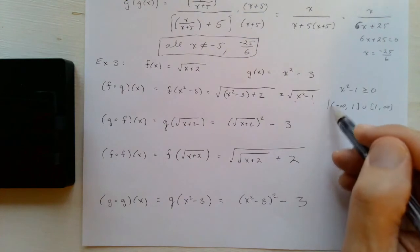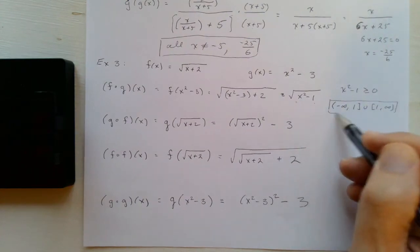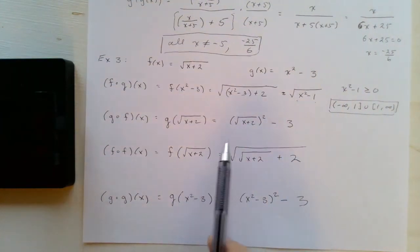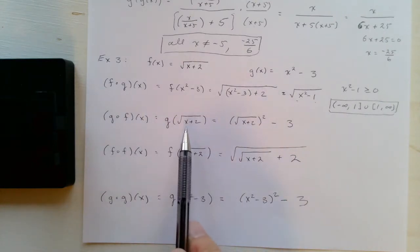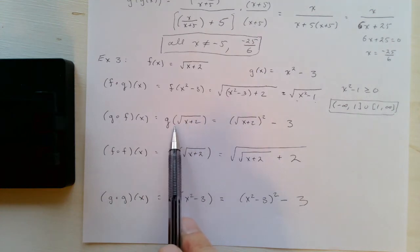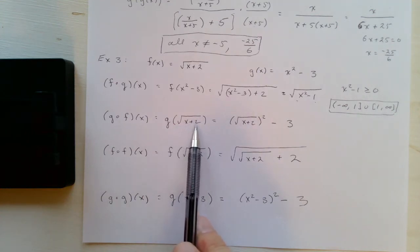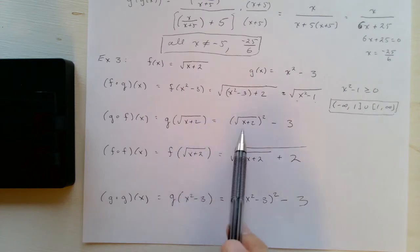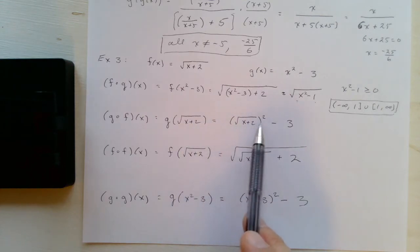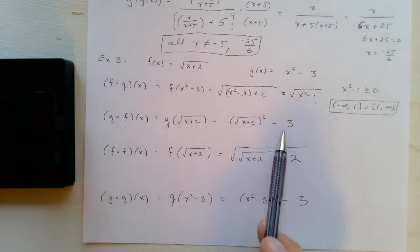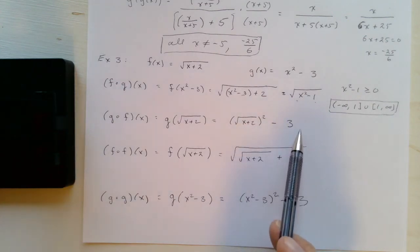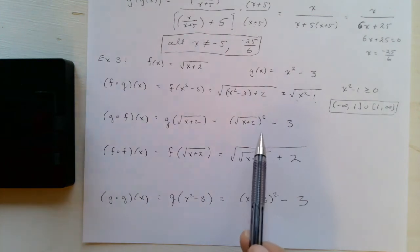Okay here, g circle f of x, this is g of the square root of x plus two. Now again, we can only, this only makes sense if x plus two is greater or equal to zero. Now it's true that when we square this, this will go away and you'll get x plus two minus three, and so you might think this might be x minus one and that will be when it is defined.